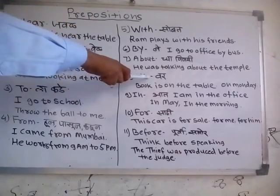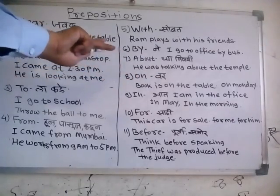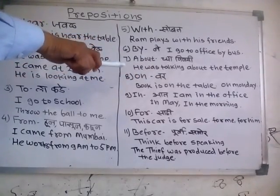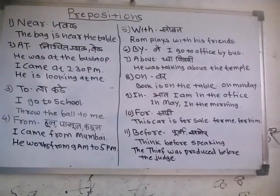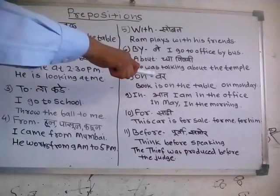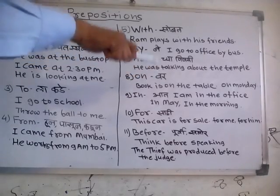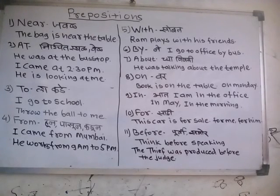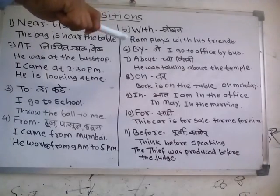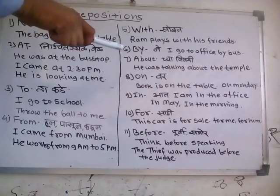Next is 'on'. 'On' shows the relationship between two things, between two nouns. Maximum times it is used to show the relationship between two things. For example: Book is on the table. We also use 'on' with all day names: on Monday, on Sunday, on Tuesday, on Friday, on Saturday, on Thursday. So 'on' is used with all day names as well as to show the relationship between two things.